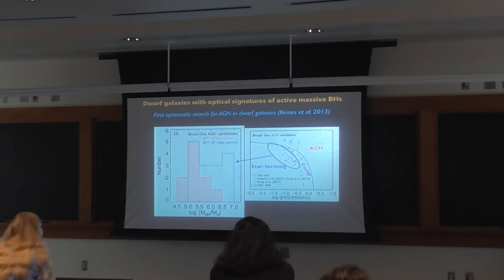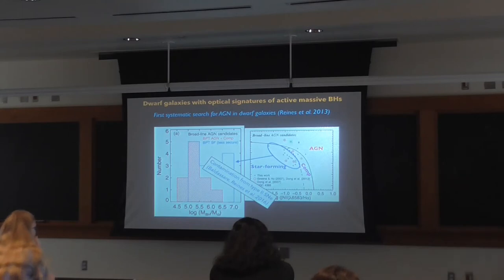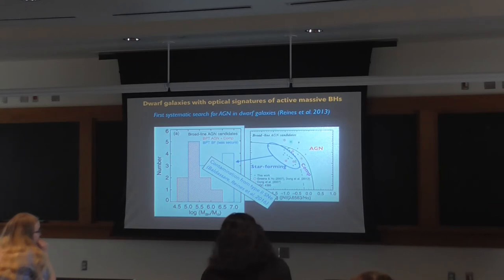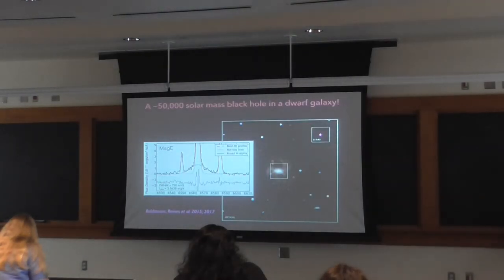Returning to the objects in the star-forming BPT region with broad lines — I was suspicious of these because they didn't have narrow-line ratios indicating AGN, and the broad lines were really wide, leading to abnormally high black hole masses. It turns out there's heavy contamination from Type II supernovae, which can make really broad H-alpha emission. But we can see it disappear: we take a long spectrum, come back 10 years later, and that broad line has faded. For the ones in the AGN/composite part, the broad line is still there as expected. So you want the narrow-line ratios plus the broad line for a secure identification.